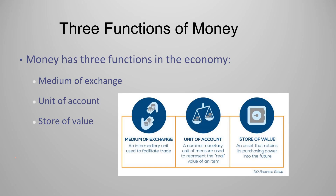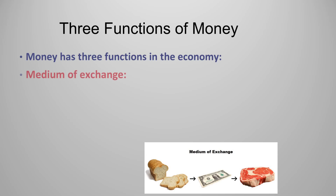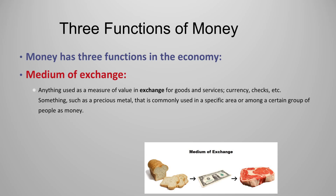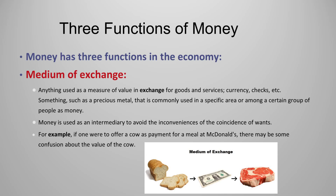Money has three functions: medium of exchange, unit of account, and store of value. Anything with these three functions can be considered money. The first — medium of exchange — refers to anything used as a measure of value in exchange for goods and services, such as currency or checks. Money is used as an intermediary to avoid the inconveniences of the double coincidence of wants. For example, if one were to offer a cow as payment for a meal at McDonald's, there may be confusion about the value of the cow.